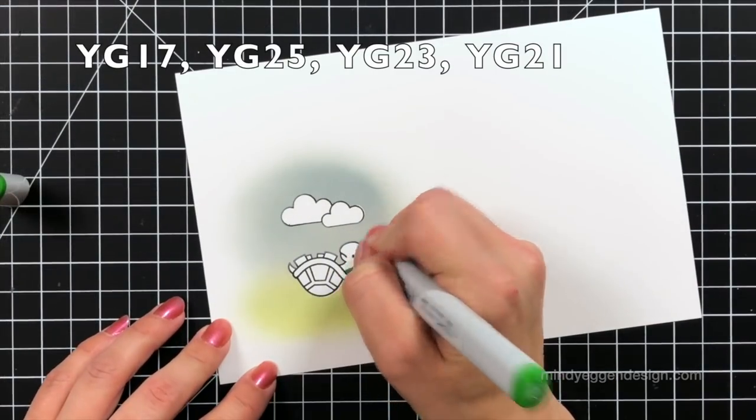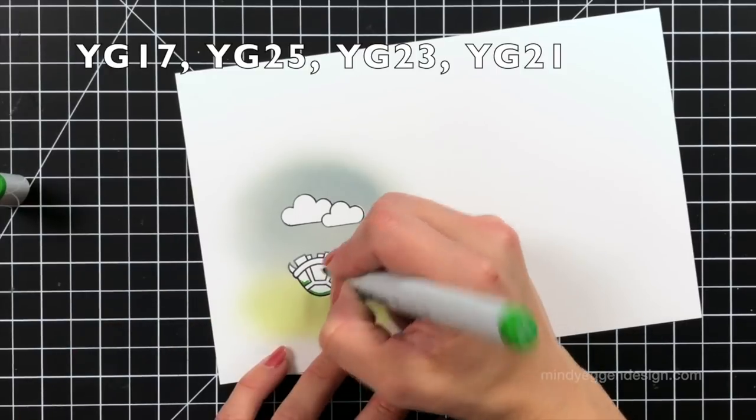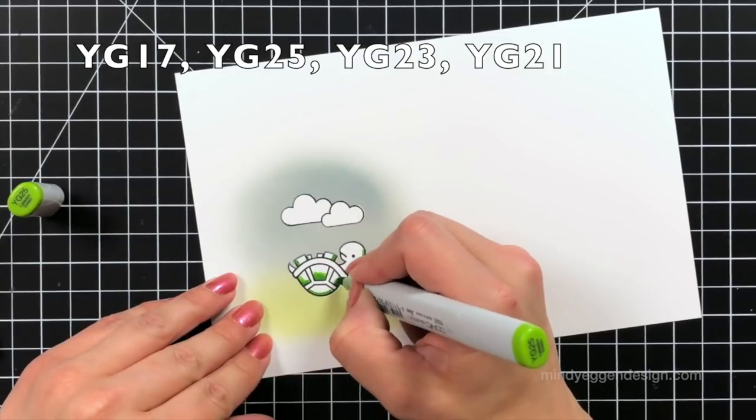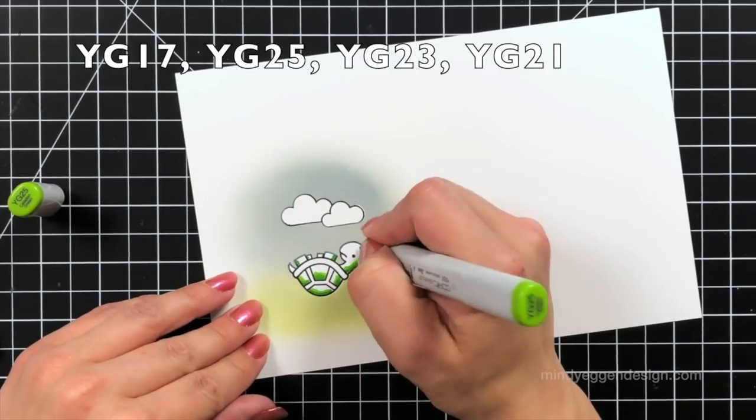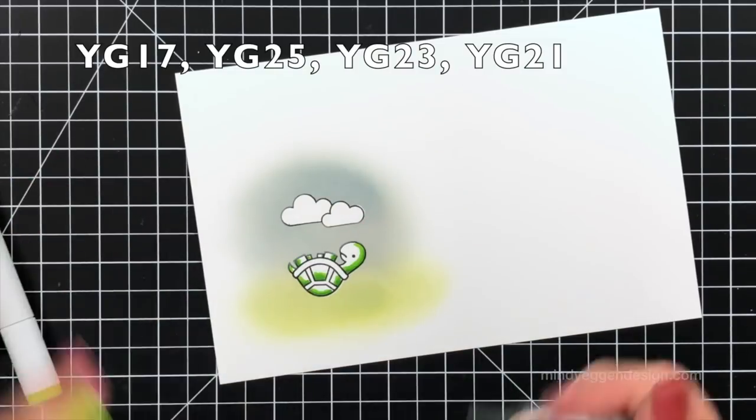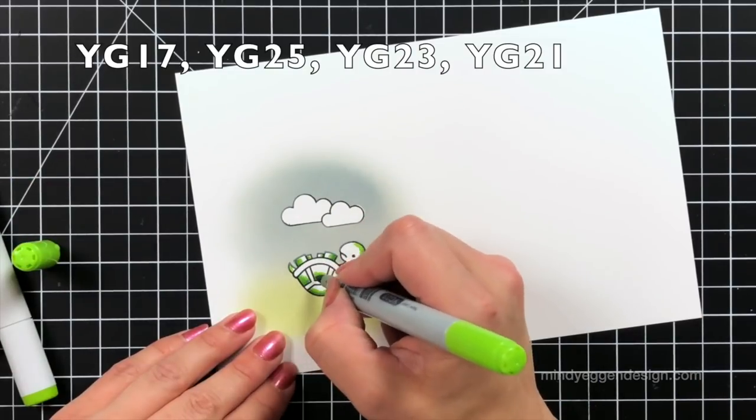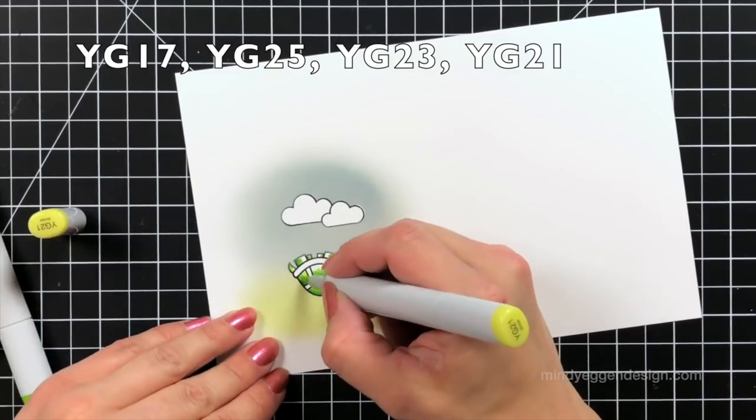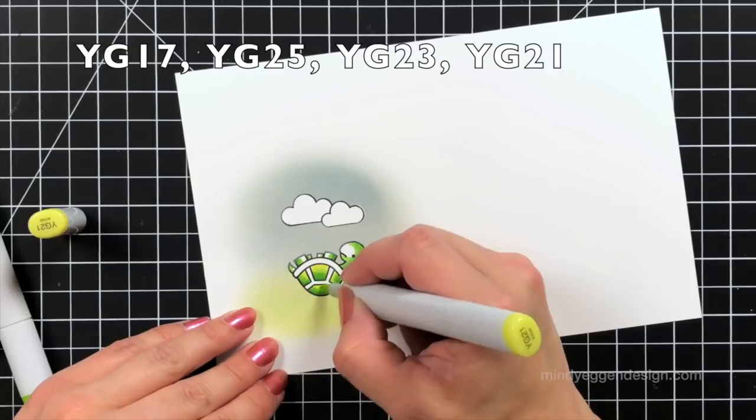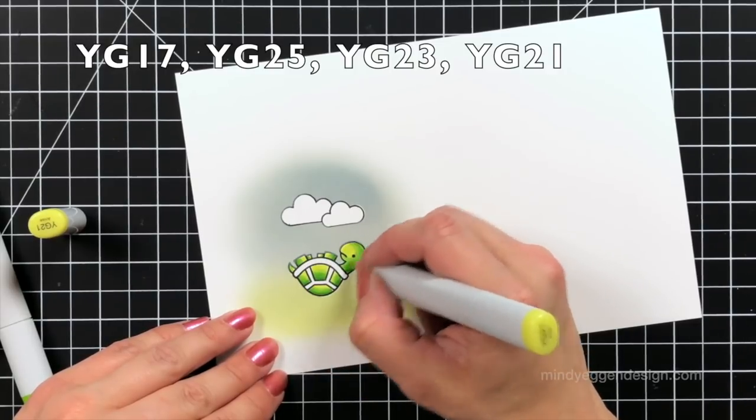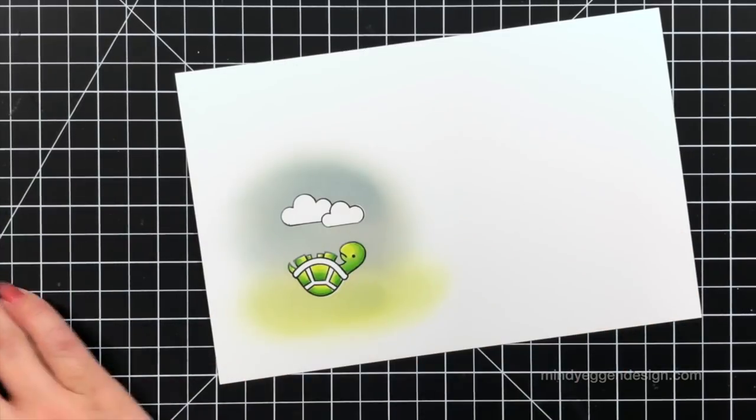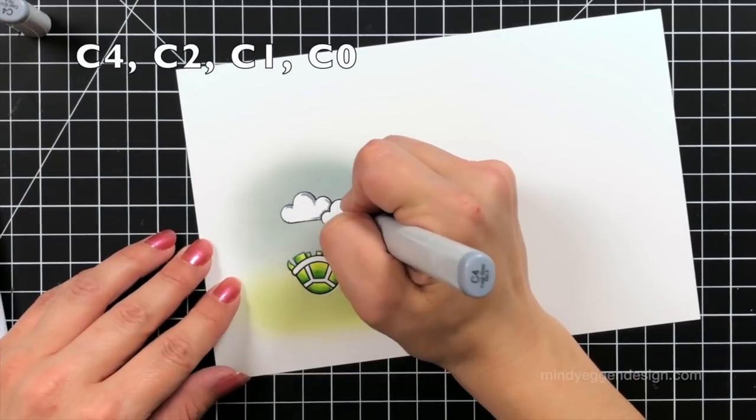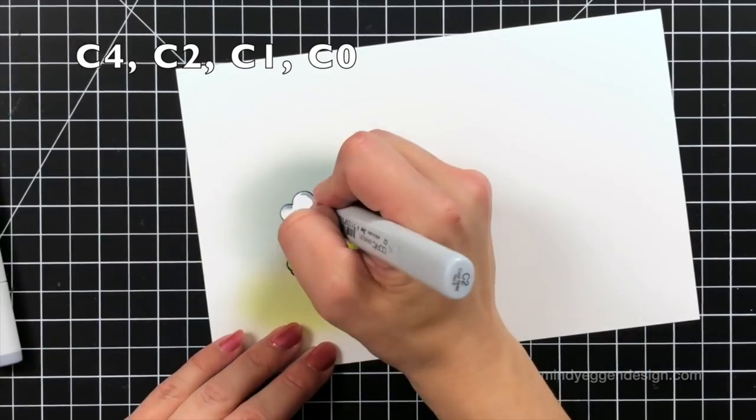Then I get started on the Copic coloring. Since I did use the Lawn Fawn white cardstock and I had stamped these into the jet black ink, it's Copic friendly. I'm starting with the unhappy turtle, and I used YG17, YG25, YG23, and YG21. I know that sounds like a lot, but I really love this combination for my turtle. The YG17 is just a really nice green, a real nice kind of grass green to me. And then ending it with that YG21 is such a nice bright color, so it really gives some contrast to the turtle.